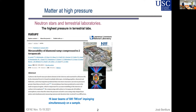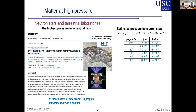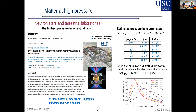Now let's compare to the neutron star scale. You can calculate the pressure from the surface gravity, density, and depth in the star. With rough estimates, you see that terapascals are reached just a few centimeters from the outer surface of the neutron star. So with macroscopic matter we can only investigate the atmosphere of the neutron star.